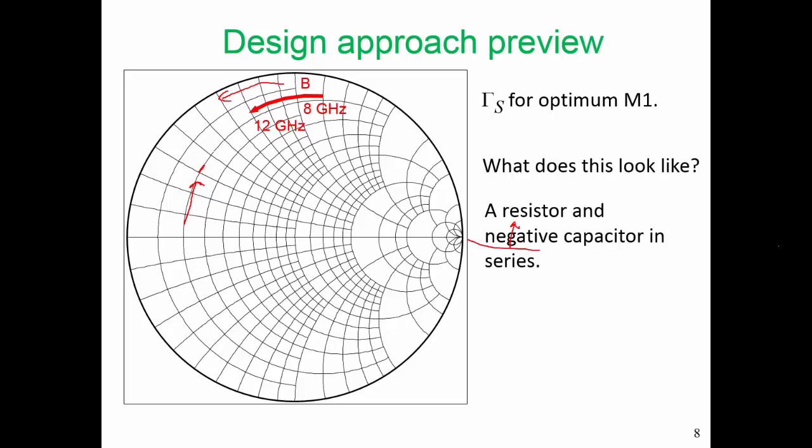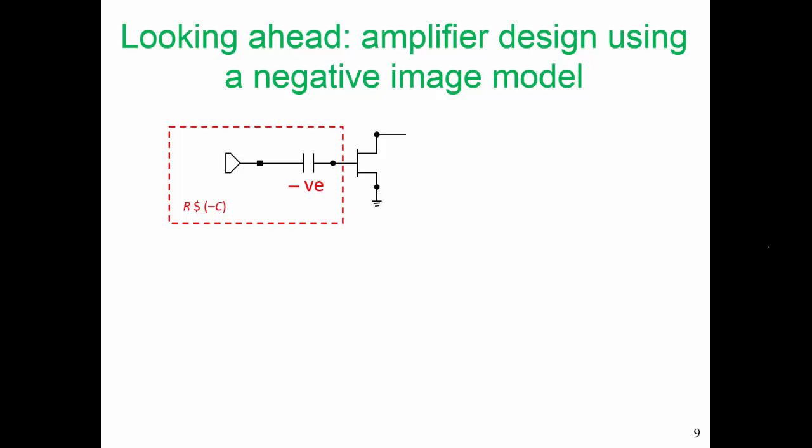Perhaps our input matching network looks like a resistor and a negative capacitor in series. Here is our input network. Here is our negative capacitor. And the resistance, well that resistance will be just the port impedance here. So it won't be 50 ohms, so we won't have a 50 ohm port. It will be some other value, which we've got to find.